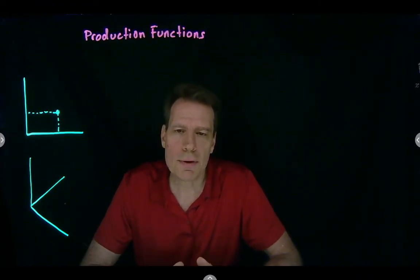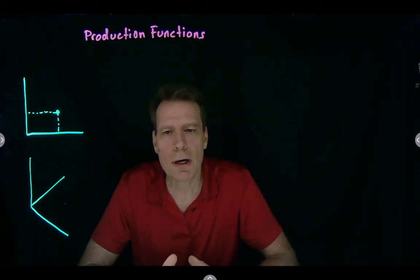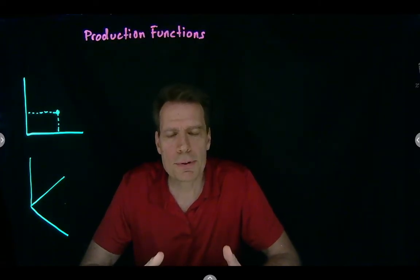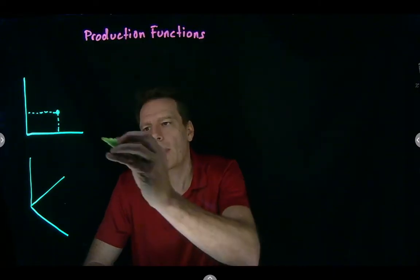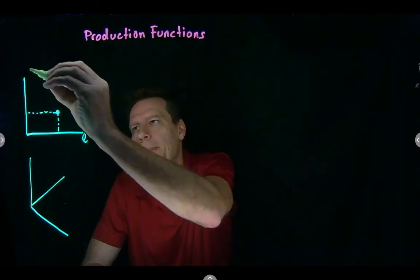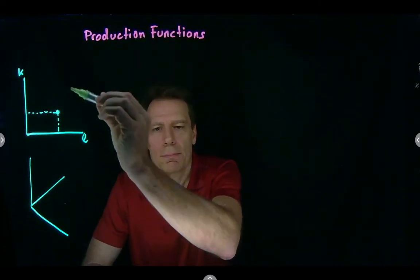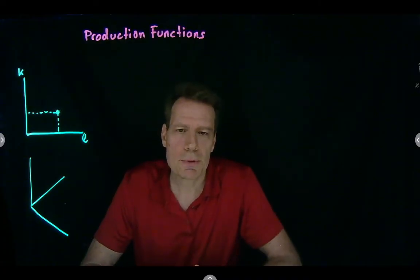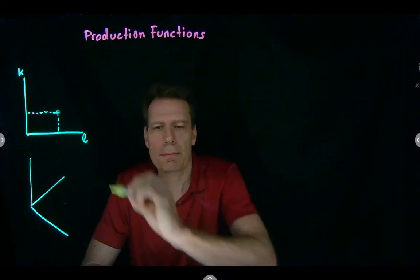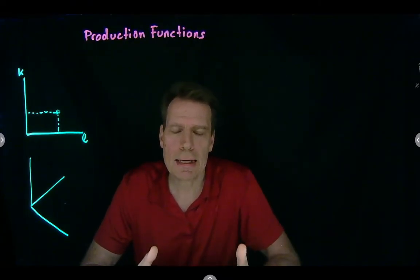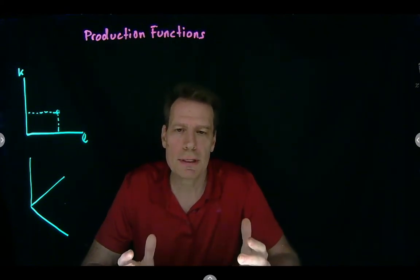We're going to do something very similar for producers, except instead of talking about consumption bundles, we're going to talk about input bundles. Inputs are the things we use to produce outputs, and the two inputs we're going to focus on are labor and capital. So now we have a space of input bundles, and every point gives us a different combination of capital and labor, from which we can produce a certain level of output given the state of technology.